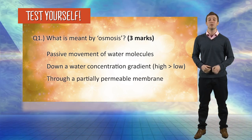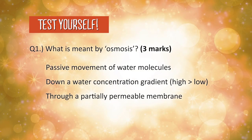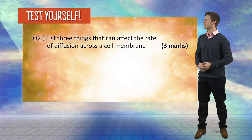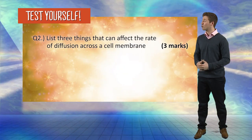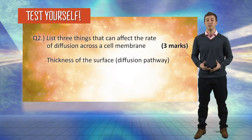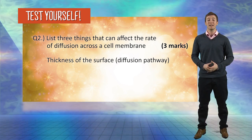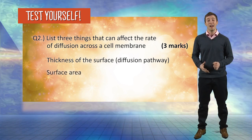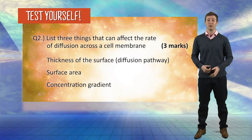Question number two: there are three things that can affect the rate of diffusion across a cell membrane, for three marks. Those three factors are: the thickness of the surface or the diffusion pathway, the size of the surface area, and the concentration gradient.